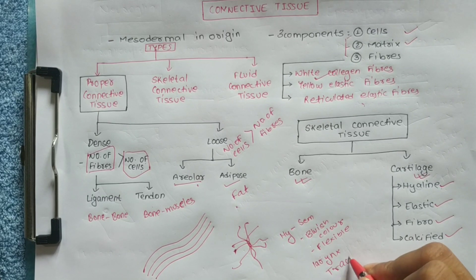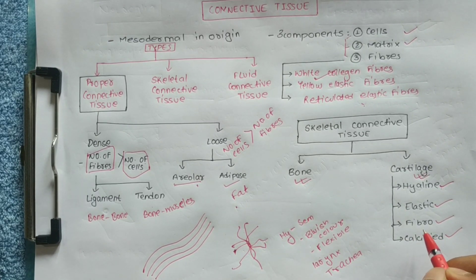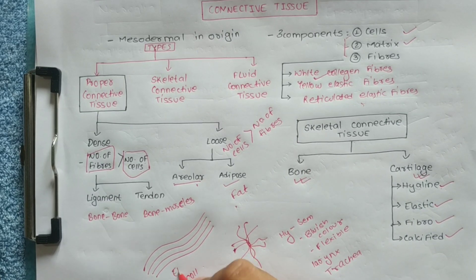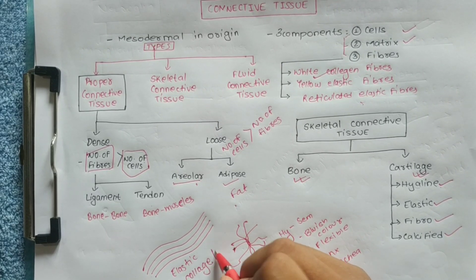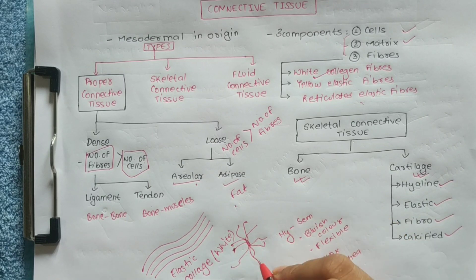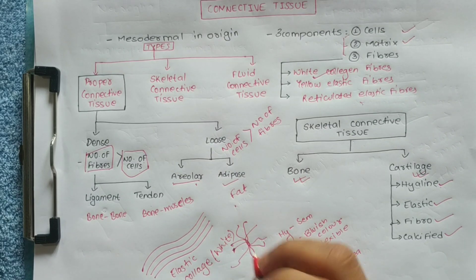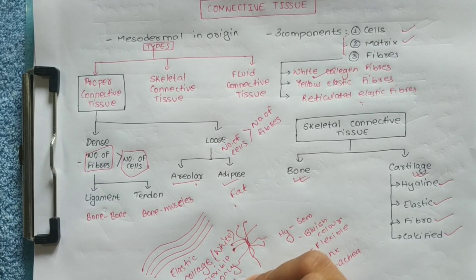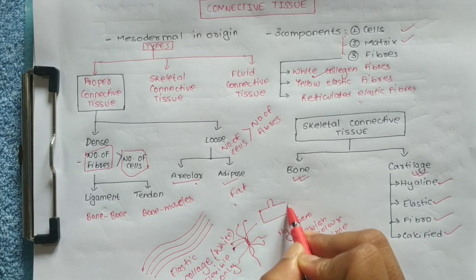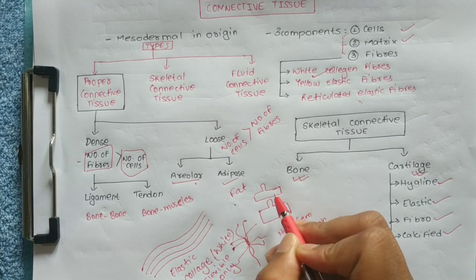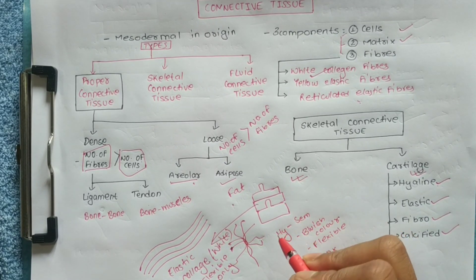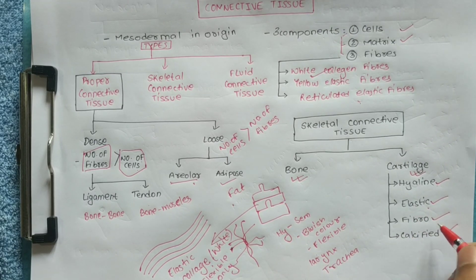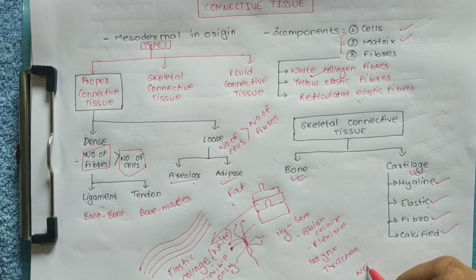In hyaline cartilage, elastic fibers are present while collagen fiber content is relatively low. It is white in color and is the strongest type. Elastic cartilage is flexible, yellow in color, and is found in the nose and ear.